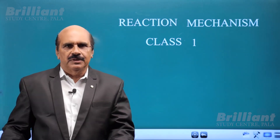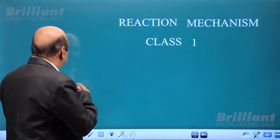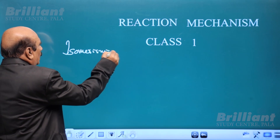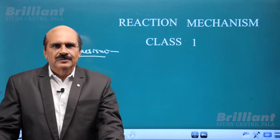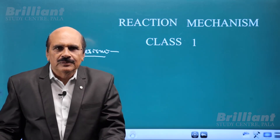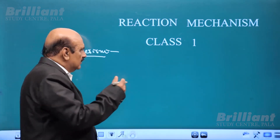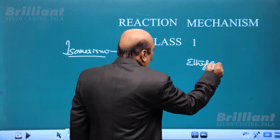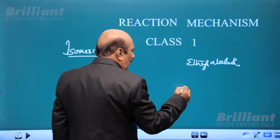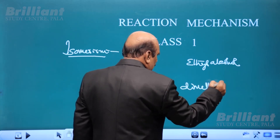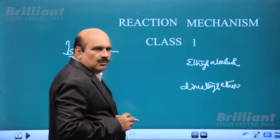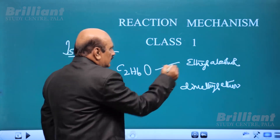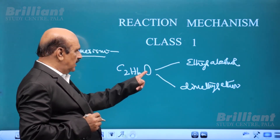The first topic in this chapter is Isomerism. What do you know about isomerism, or can you give an example for isomerism? One classical example is that of ethyl alcohol and dimethyl ether, both having the same molecular formula C2H6O — 2 carbon atoms, 6 hydrogen atoms and 1 oxygen atom.